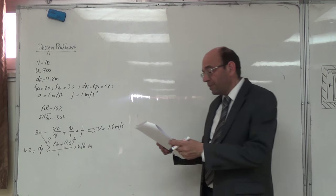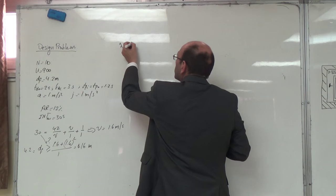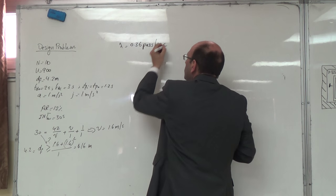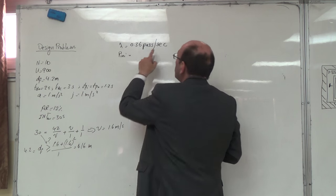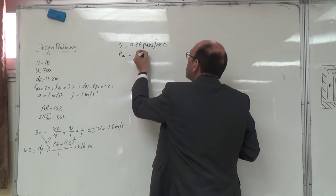إذن هاي الراتد سبيد. بنبدأ نحسب الآن. بنحسب لامدة. لامدة تطلع معي 0.36 passengers per second. وبطلع P initial بتساوي 30 في 0.36، قديش بتطلع معي 10.8 passengers.